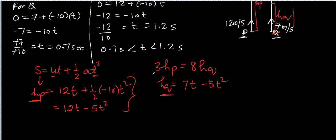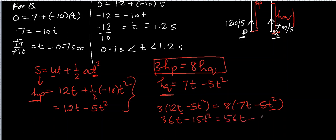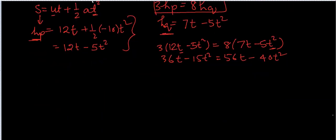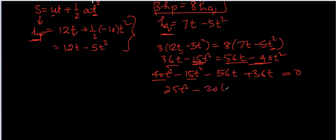Now substituting into 3HP = 8HQ: 3(12T − 5T²) = 8(7T − 5T²). Since both particles were thrown at the same time, T is the same for both. Expanding: 36T − 15T² = 56T − 40T². Rearranging: 40T² − 15T² − 56T + 36T = 0, which gives 25T² − 20T = 0.